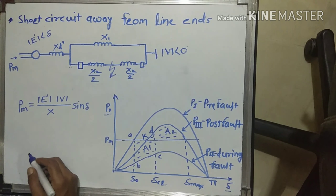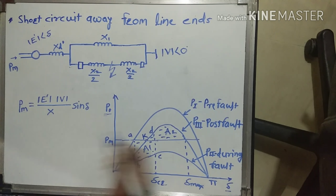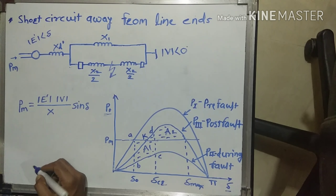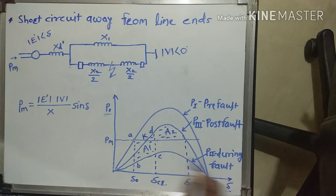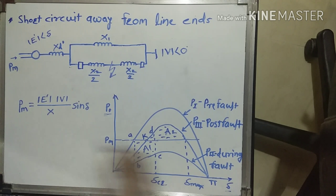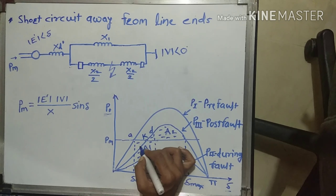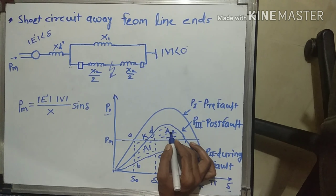If there is no fault in our system and mechanical input power equals output power, we are at point A. When a fault occurs on line 2, our power shifts from point A to B and increases on the curve of P2, because P2 is the during-fault power. At point C, we recover the fault using a simultaneous circuit breaker and remove line 2 from the system, then our power shifts from point C to D and increases toward the synchronous field. It will come back and increase and decrease continuously, finally stabilizing at point K. This is the accelerating area and this is the decelerating area.